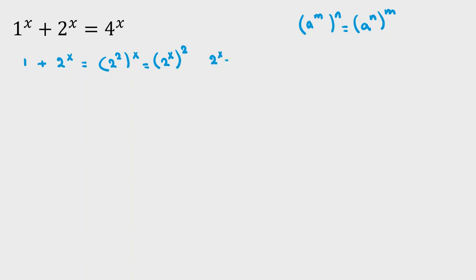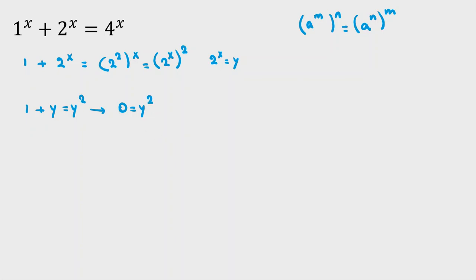I let 2 to the x equal to y. So we have 1 plus y equal to y squared. Taking all terms to one side, we get y squared minus y minus 1 equal to 0.